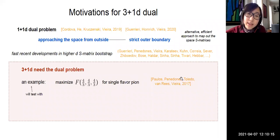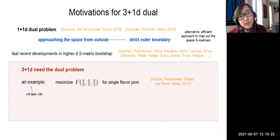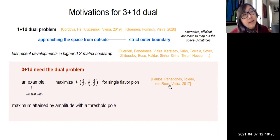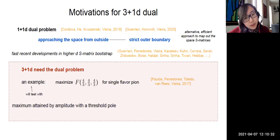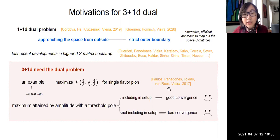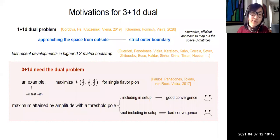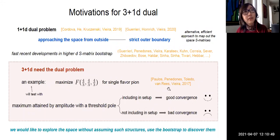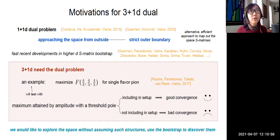This has the physical meaning of putting a bound on quartic couplings for single pion scattering. It was observed that the maximum was attained by an amplitude with a pole at the multiparticle threshold. If one includes such a pole in the S-matrix bootstrap setup, the program converges very well; if not, the convergence is bad. Ideally we would like to explore the space of S-matrices without assuming such structure, but rather discover it as a result of the bootstrap — and this is what we believe the dual problem will be able to do.